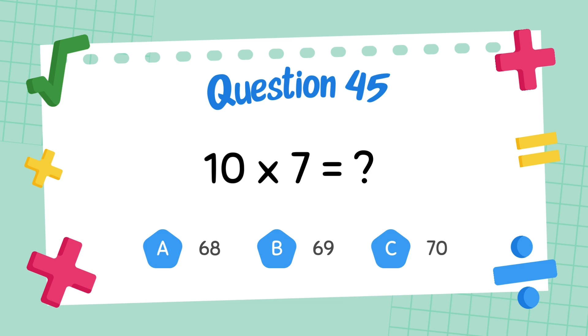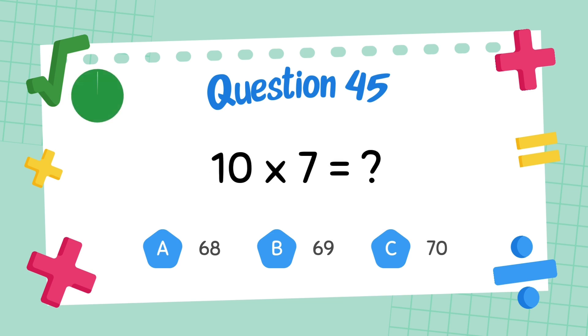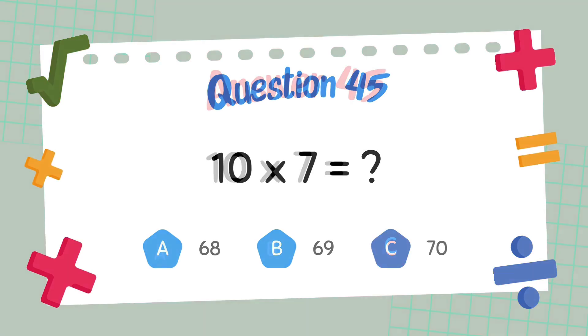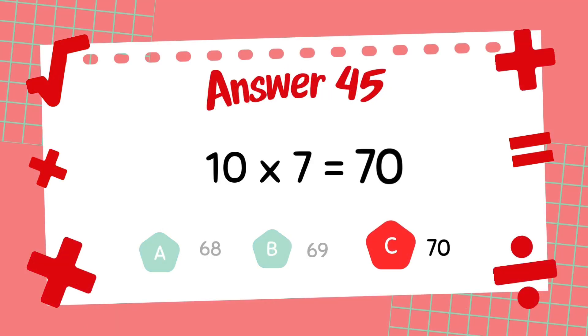What is 10 multiply 7? The answer is 70.